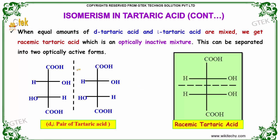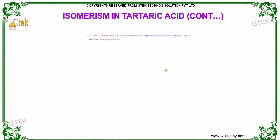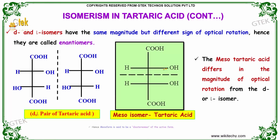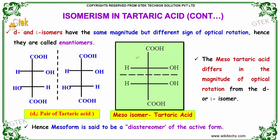This can be separated into two optically active forms as shown here. Whereas this is racemic tartaric acid and it is very tough for the bond to break. Dextro and levo isomers have the same magnitude but differ in the sign of optical rotation; hence they are also known as enantiomers.